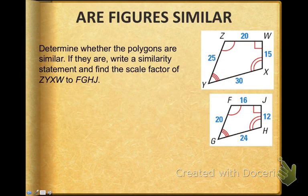Now, we know that similar figures have sides that are proportional, so the ratio of the sides are the same. In this particular problem, I want you to determine whether these polygons are similar. If they are, write a similarity statement and find the scale factor of the two polygons.